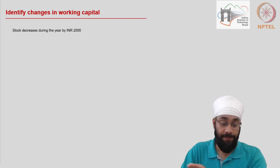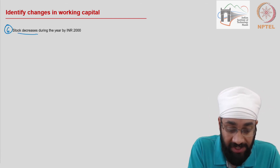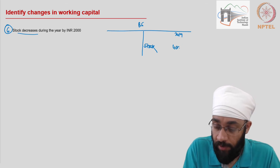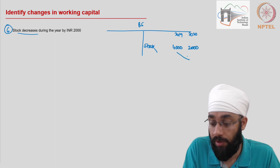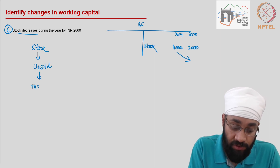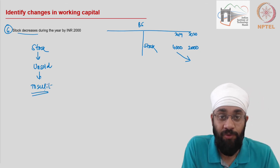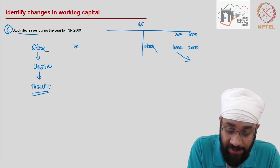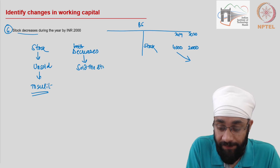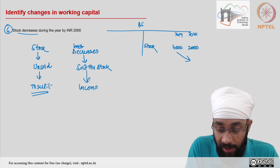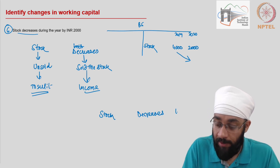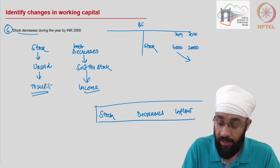One more item: stock is decreasing. In the balance sheet, unsold stock was 4,000 in 2019 and is now only 2,000 in 2020. Stock is meant to be sold; when you sell it you receive cash. When stock decreases, it means you have sold the stock, which brings in income. The learning: when stock decreases between two years, it brings in cash — resulting in inflows for the business.